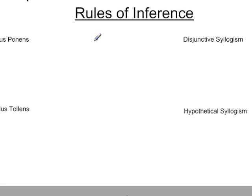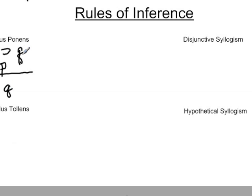Let's go back over the idea of modus ponens. Modus ponens starts with the idea that P implies Q — if P, then Q. If we have P, we can therefore assume that we have Q. Because we stated in the rule that P leads to Q, if we have P, it naturally leads us to the idea that we have Q. That's how that argument form works.